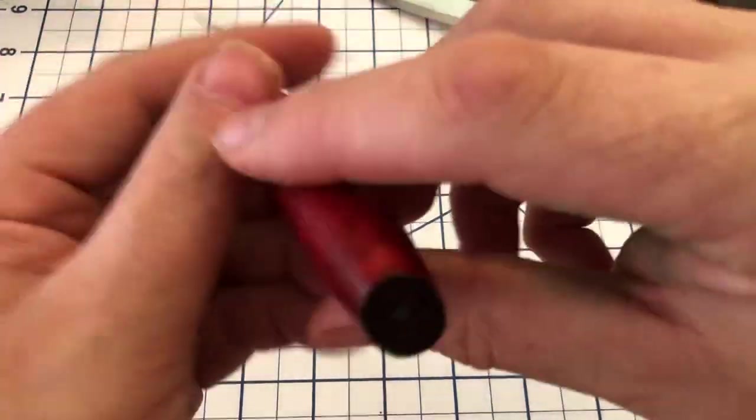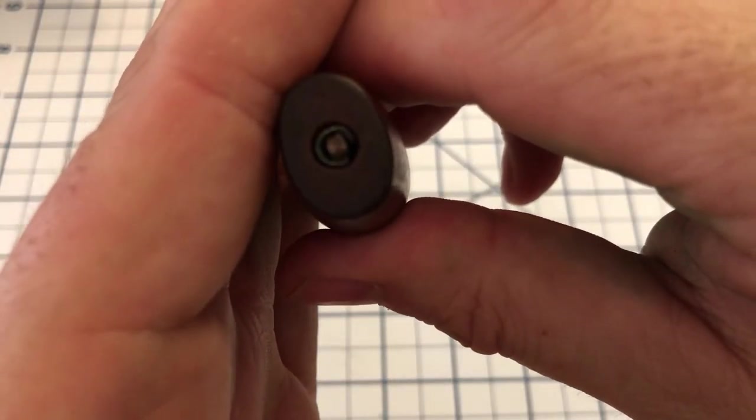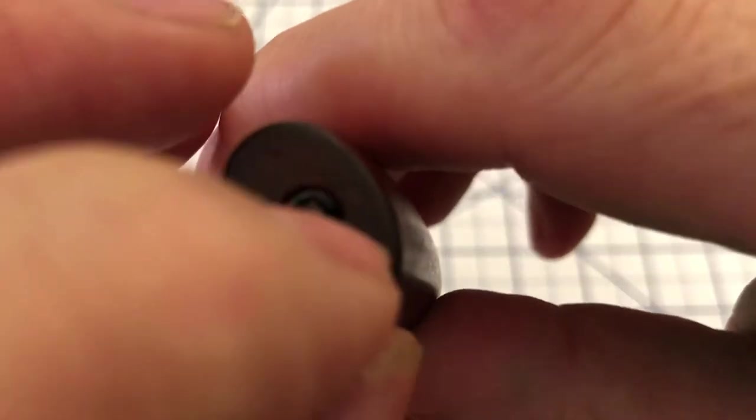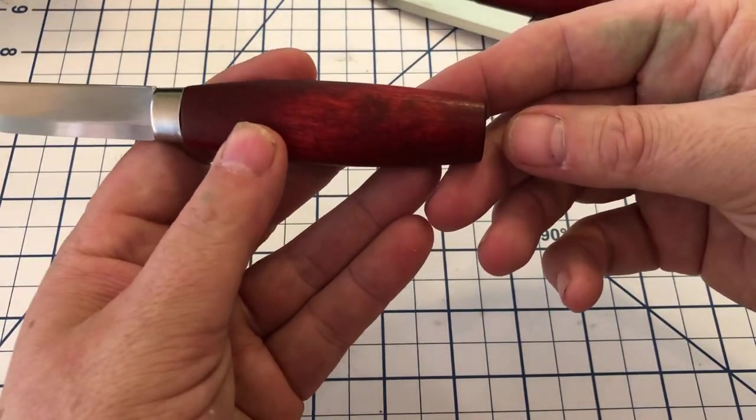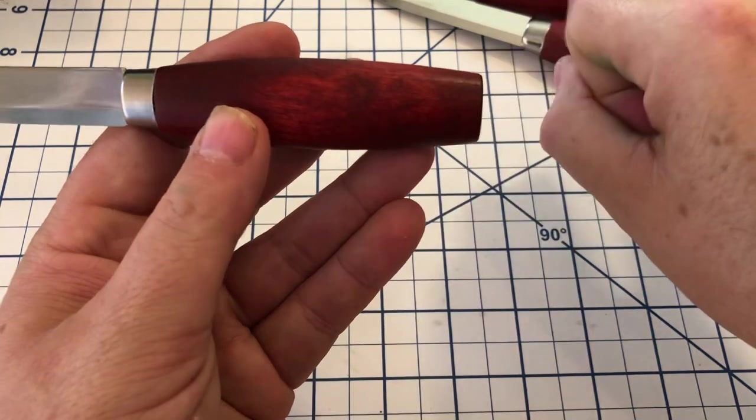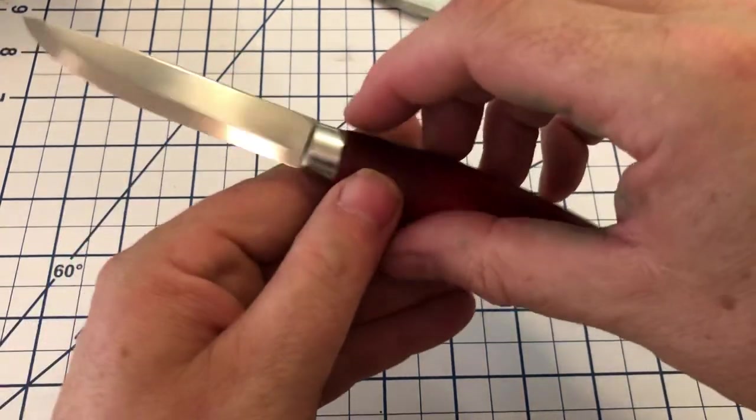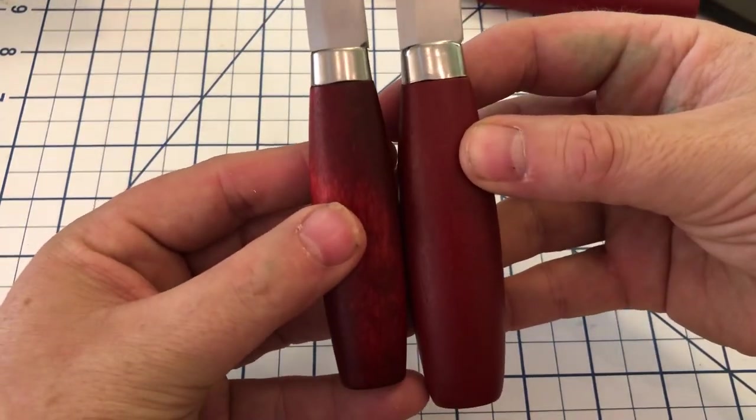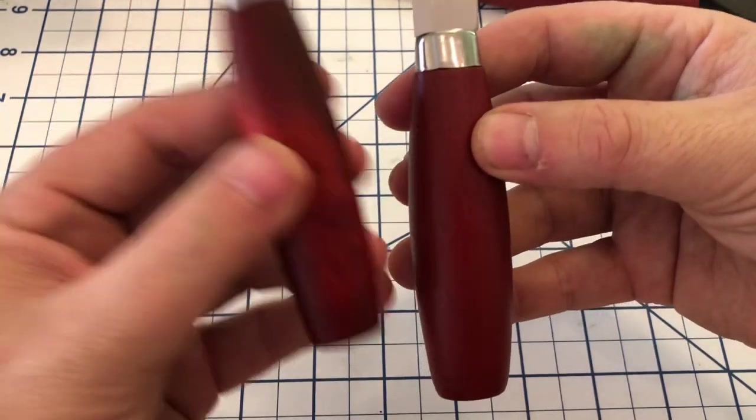The other difference you can see, hopefully, the rat tail tang now comes all the way through and then is held in place with a little ring. A fairly traditional style of holding. Some of the makers will peen the end into a little brass ring. This one just has the little ring pounded in. So the tang length on these two is probably about the same. This may even have a little longer tang.